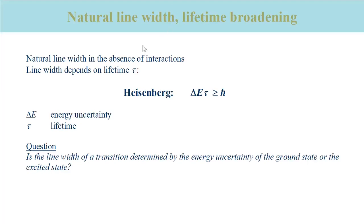Even without interactions, spectral lines are not infinitely sharp. This is due to the Heisenberg uncertainty principle, which says that a state's energy and its lifetime cannot be determined with infinite precision. The product of the energy uncertainty delta E and lifetime tau is larger or equal than h-bar, which is Planck's constant divided by 2π.